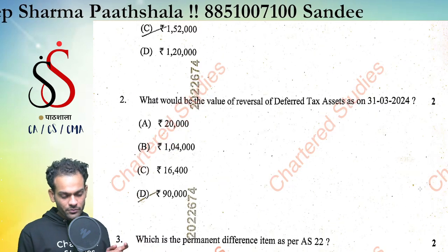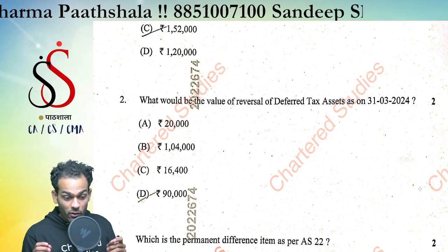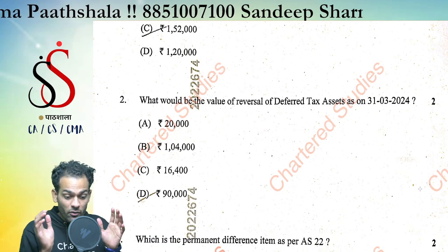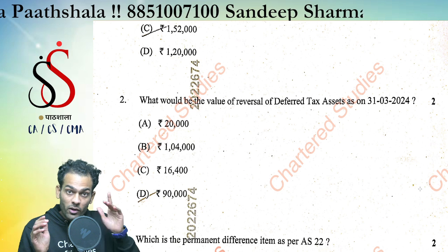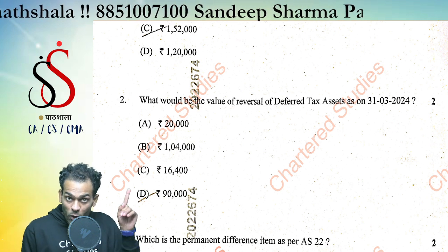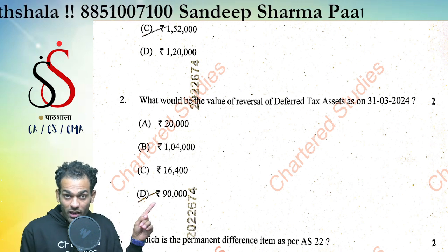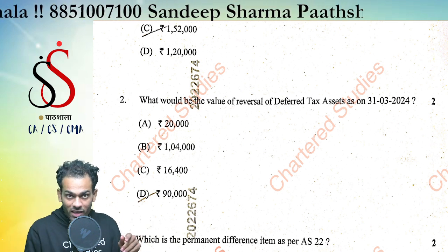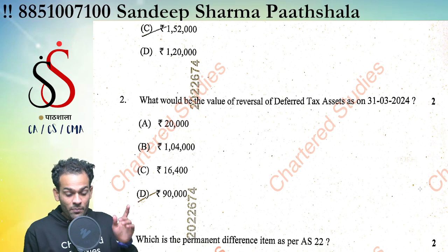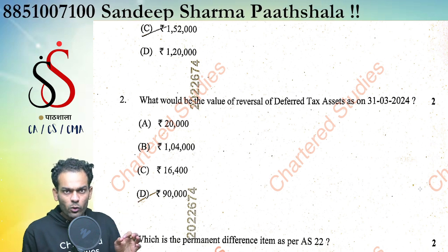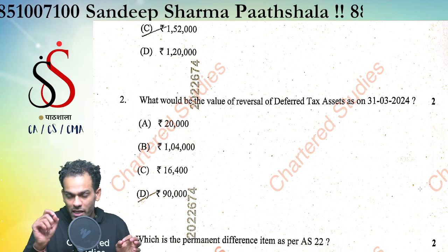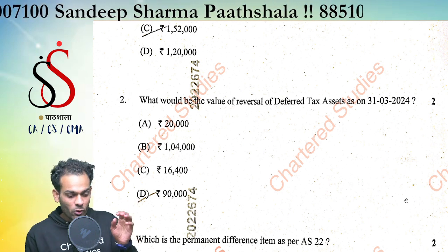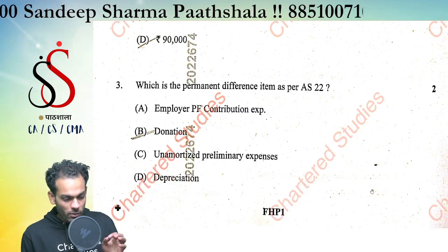Next, what would be the value of reversal of deferred tax asset? How much deferred tax asset would be reversed? Remember, employer contribution disallowed in the previous year was allowed in the current year — this language was written in the question. The amount was 82,000 multiplied by the tax rate of 20%, so your answer would be 16,400.